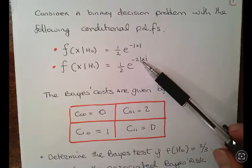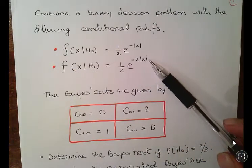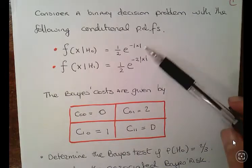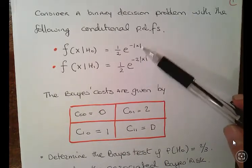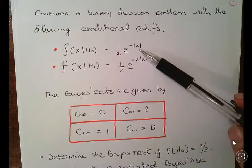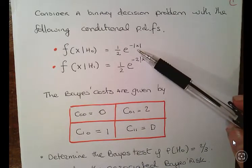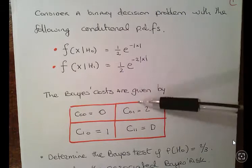And the conditional probability of x given H1 equals a half times e to the minus two times the absolute value of x. And you will actually encounter a lot of these absolute value functions that you'll be expected to integrate, so it'll be a good idea to investigate how to integrate functions like this.